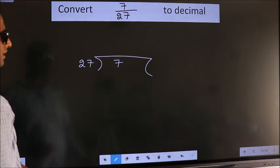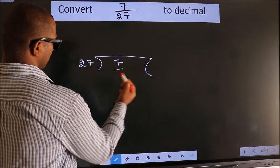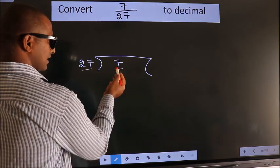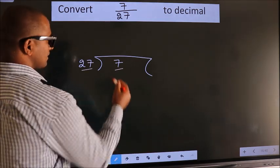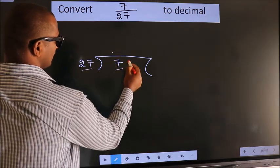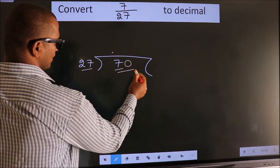Next, here we have 7, here 27. 7 is smaller than 27. So what we should do is put a dot here, take 0 here. So, 70.